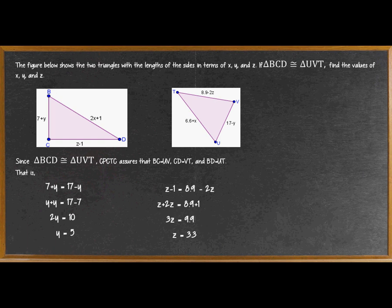Next is Z. For Z, we have Z minus 1 equals 8.9 minus 2Z. So Z minus 1 is our CD, and 8.9 minus 2Z is our VT. Again, by addition or subtraction property of equality, we have Z plus 2Z equals 8.9 plus 1.